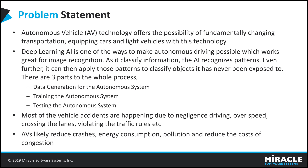Deep learning makes autonomous vehicle technology possible. It works on the concept of neural networks. A neural network passes data through an interconnected layer of nodes, classifying information and characteristics of a layer before passing the results onto other nodes in subsequent layers. The term 'deep' refers to the number of hidden layers present in the network. Deep learning is used in areas like image recognition, self-driving vehicles, voice cloning, and image colorization.